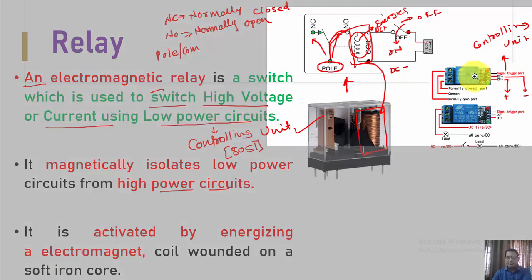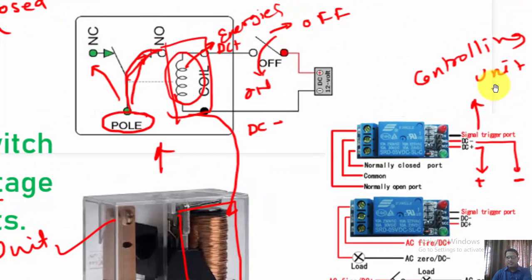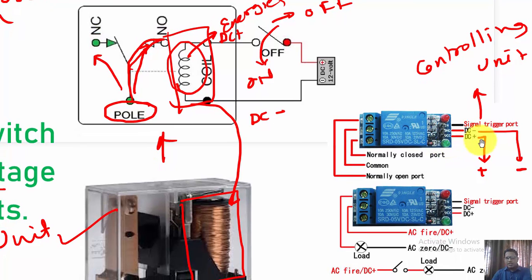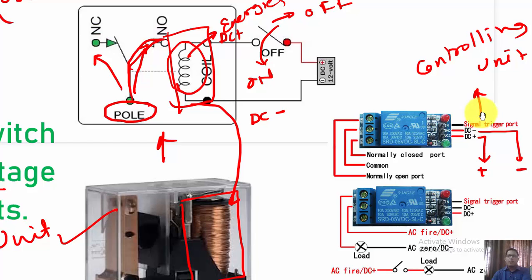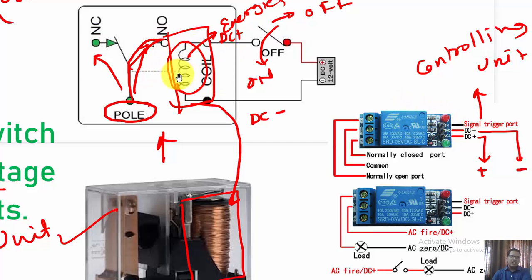As shown here, DC+ is connected to the positive plate of the battery, DC- to the negative plate, and the signal trigger comes from the controlling unit. In our case, we send a high pulse through the microcontroller, which causes the energizing and activation of this coil.